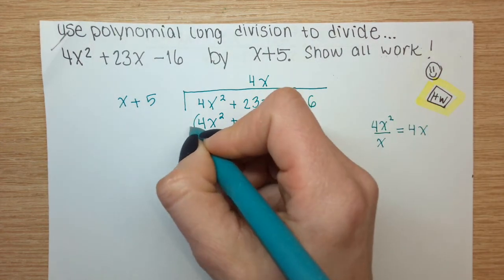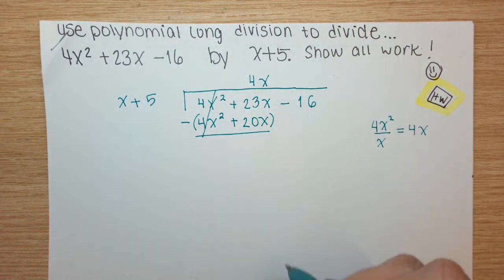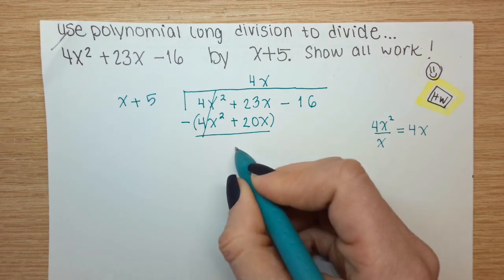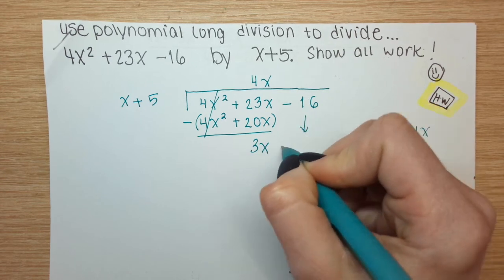4x times x plus 5 is 4x squared plus 20x. Parentheses, minus sign, underline, cancel. What goes down here? 3x. Bring down the minus 16.